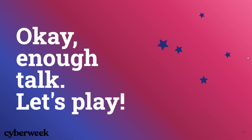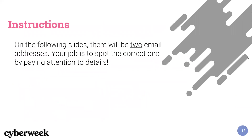Now we're going to play a game that's going to help you better spot forms of social engineering. On the following slides, there are going to be two email addresses. Using what you know about phishing, baiting, and the other forms we discussed, check whether or not each email address is legitimate. We're going to set a timer for about 10 seconds — try to spot if you can tell the difference between the two emails.